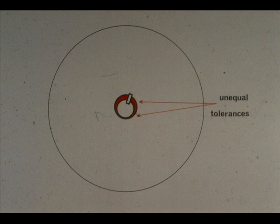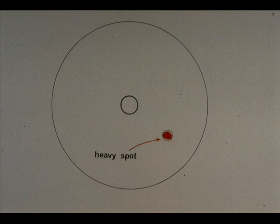In short, it does not revolve around its center as it should. All of these reasons for unbalance have the same result: an unequal distribution of weight around the center. The end result of imperfections is known as a heavy spot. The heavy spot makes one side of the rotating assembly heavier than the other side, creating the unbalance.